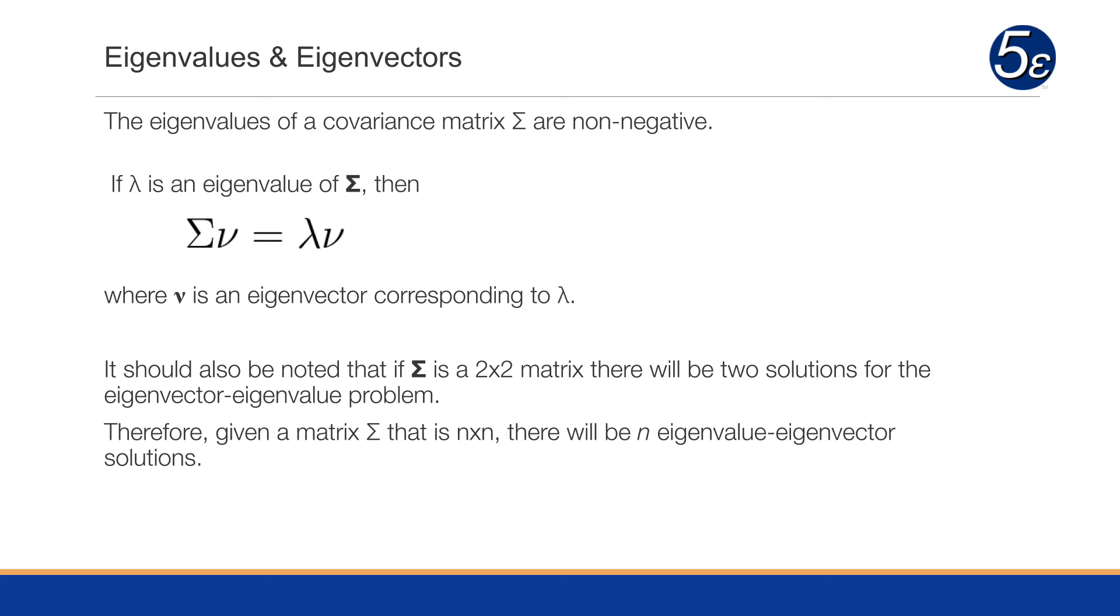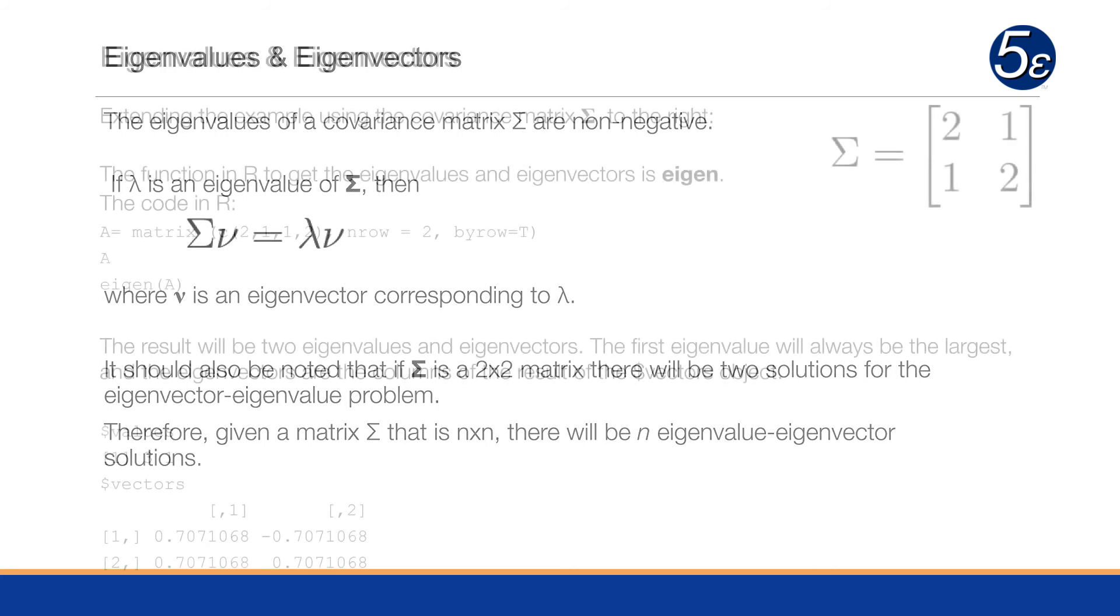So we also need to note that if we have a covariance matrix that's 2 by 2, there will be two solutions for the eigenvector eigenvalue problem. So if you have a matrix with four dimensions, you will have four solutions to this equation. So you'll have four eigenvectors and four eigenvalues, and they will correspond to each other.